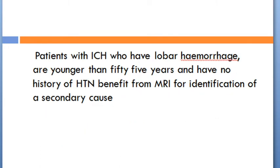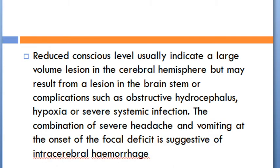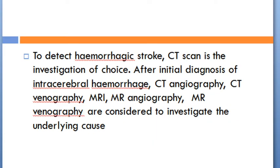Patients with intracerebral hemorrhage who have lobar hemorrhage, are younger than 55 years, and have no history of hypertension benefit from MRI for identification of a secondary cause. Reduced conscious level usually indicates a large volume lesion in the cerebral hemisphere but may result from a brainstem lesion or complications such as obstructive hydrocephalus, hypoxia, or severe systemic infection. The combination of severe headache and vomiting at onset of focal neurological deficit is suggestive of intracerebral hemorrhage. CT scan is the investigation of choice; CT angiography, CT venography, MRI, MR angiography, and MR venography are considered to investigate the underlying cause.